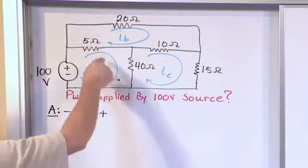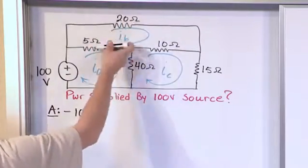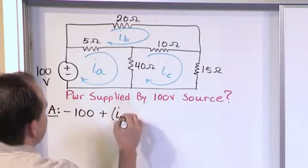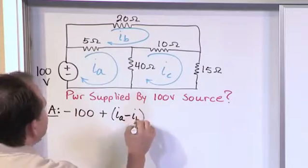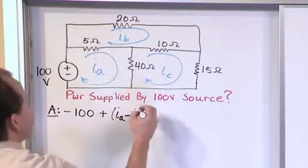But notice I'm bordering two meshes. IA is actually going in this direction. IB is actually going in the opposite direction. So the way I handle that is I say IA minus IB. That's the current flowing in the 5 ohm resistor in this direction. Then I multiply by 5.